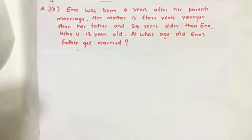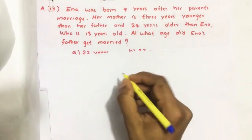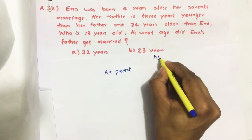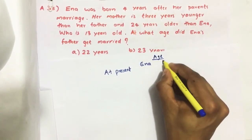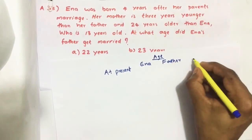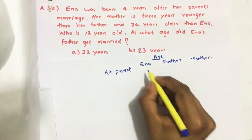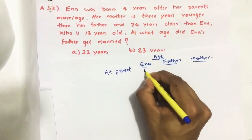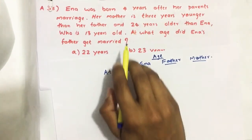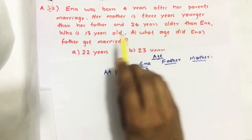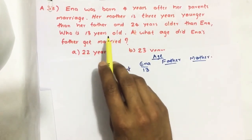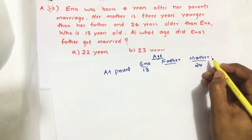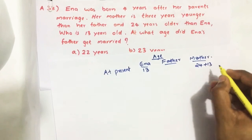First we write the given data. It is given that Inna's age is 13 years. Mother is three years younger than her father, and father is three years older than her mother. Mother's age is 24 years older than Inna, that means 24 plus 13, we get 37. So mother's present age is 37 years.